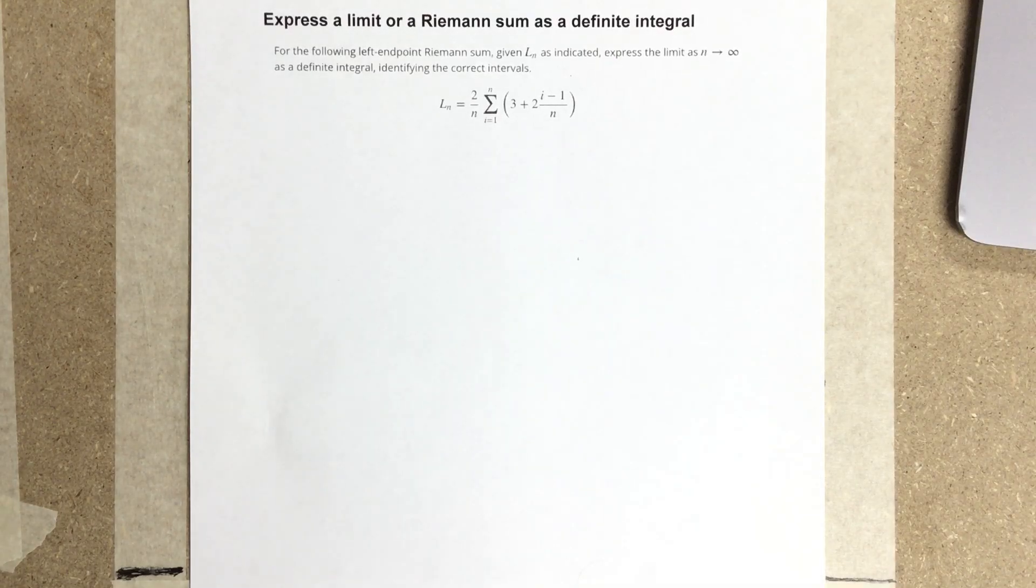In this video, we're going to express a limit or a Riemann sum as a definite integral. For the following left endpoint Riemann sum given L_n, as indicated, express the limit as n approaches infinity as a definite integral, identifying the correct intervals.